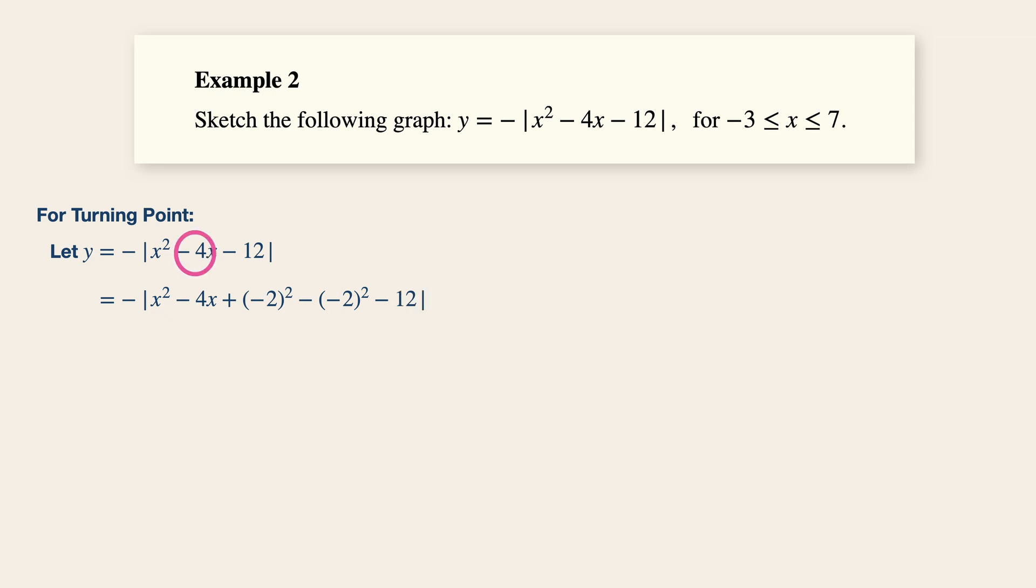You notice that we are going to take minus 4 over here, divided by 2 to give us minus 2. And this will give us minus modulus x minus 2 squared minus 16.